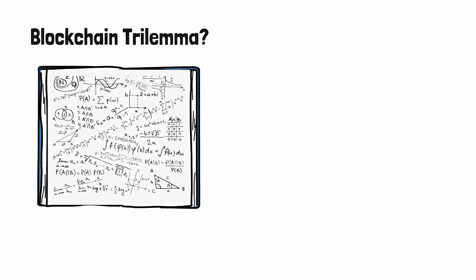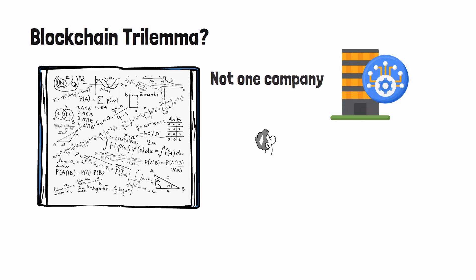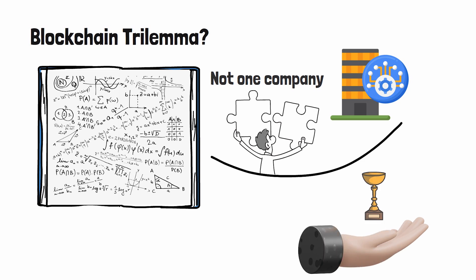I mean, that's pretty mind-blowing, right? Not only did they solve the blockchain trilemma, they legit got a patent on it. Now in case you're wondering what the blockchain trilemma is, it's a complex mathematical formula that not one company in the blockchain industry has been able to solve.